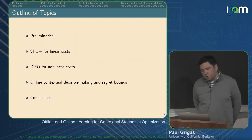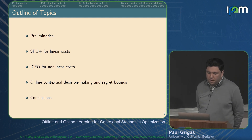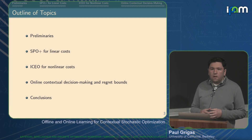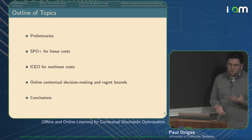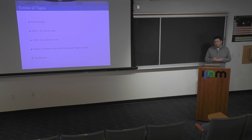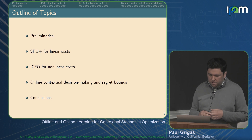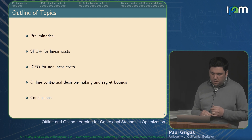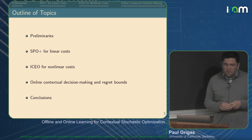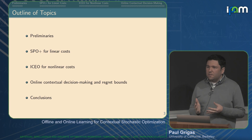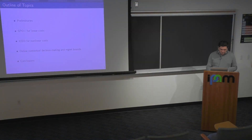Let me give the outline of the talk. I'll start with some preliminary notions and set up the general area of contextual stochastic optimization. Then I'll give a brief review of my work on SPO+ for linear costs — what we know about it both theoretically and in terms of practical performance. Then I'll talk about challenges in extending these ideas to nonlinear problems, and a new acronym called ICEO — Integrated Conditional Estimation Optimization — for dealing with nonlinear costs. Finally, if there's time, I'll talk about the online contextual extension, and then we'll have some conclusions.